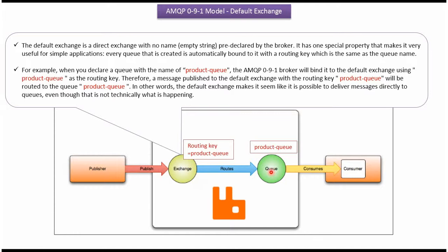Suppose we declare a queue with the name 'product queue'. The AMQP broker will bind this product queue to the default exchange with the routing key 'product queue'. Then whenever the publisher sends a message to the exchange, the exchange will check the routing key. Since the routing key is 'product queue', the exchange will send the messages to the product queue.